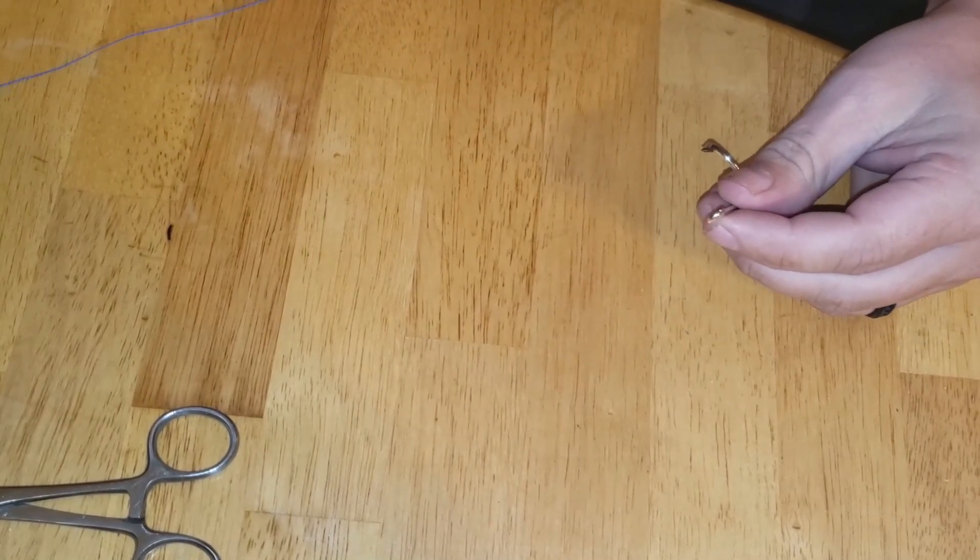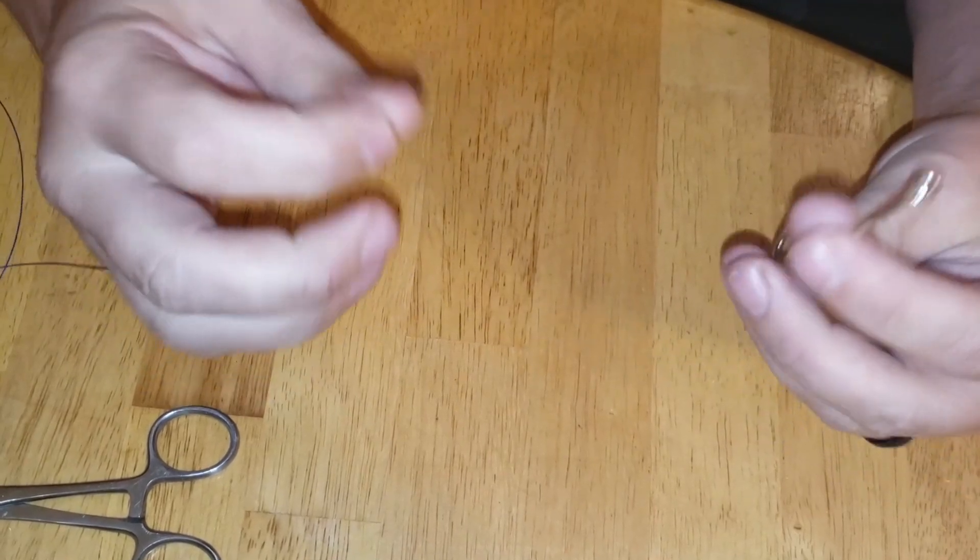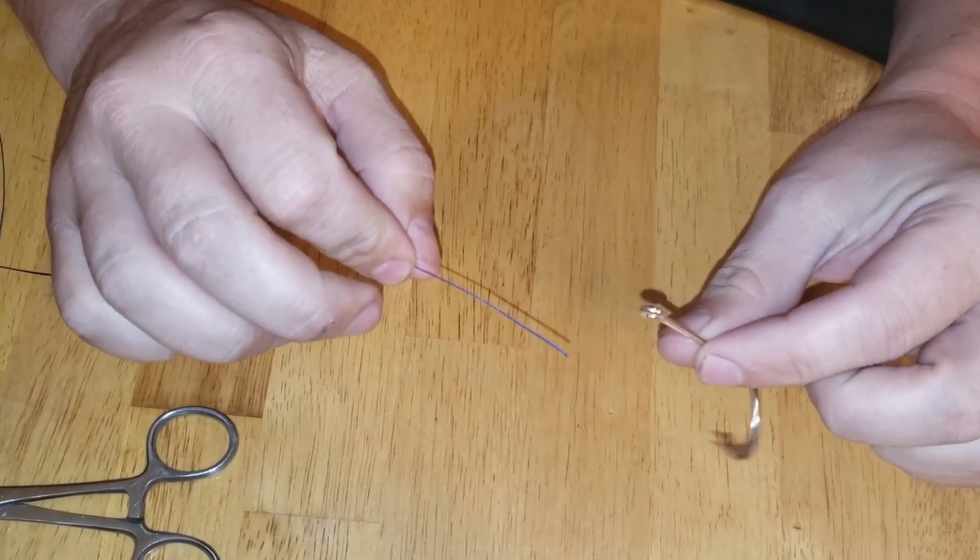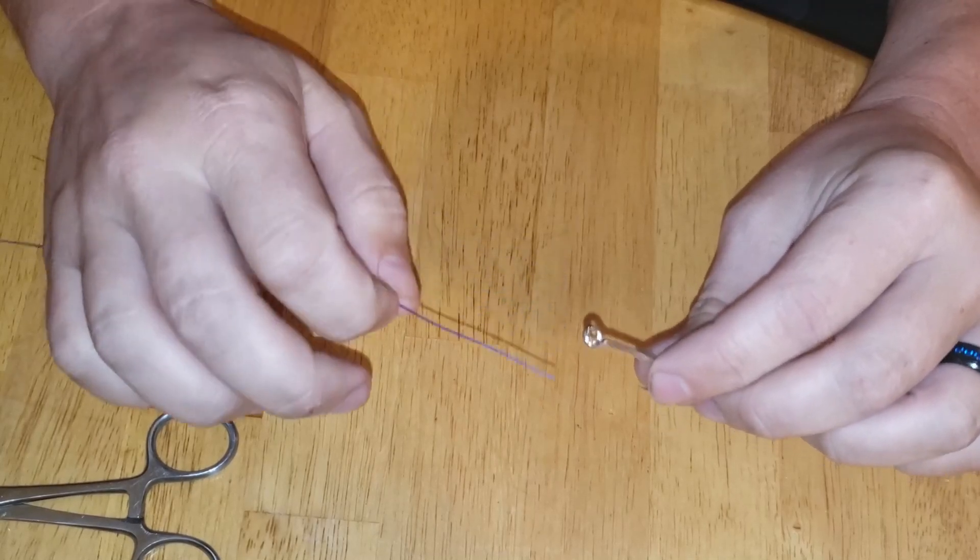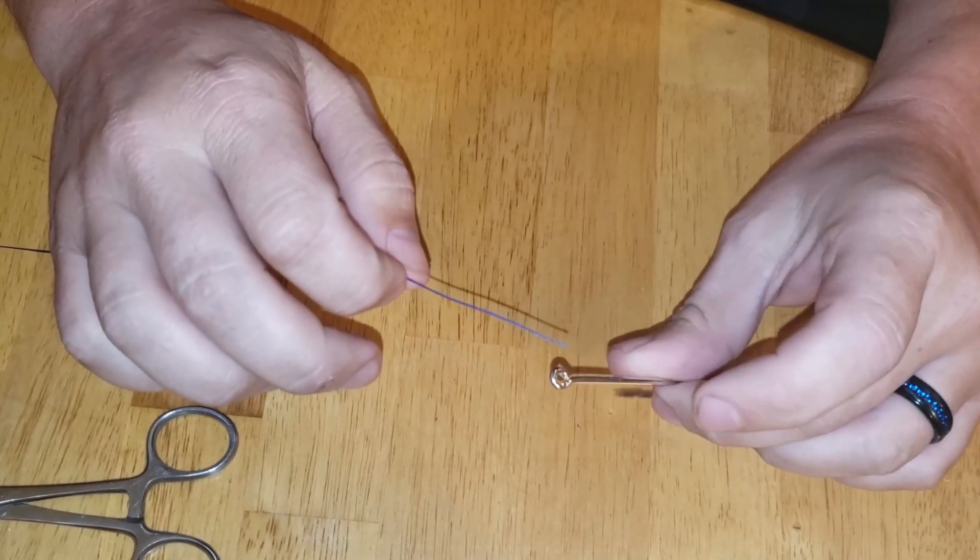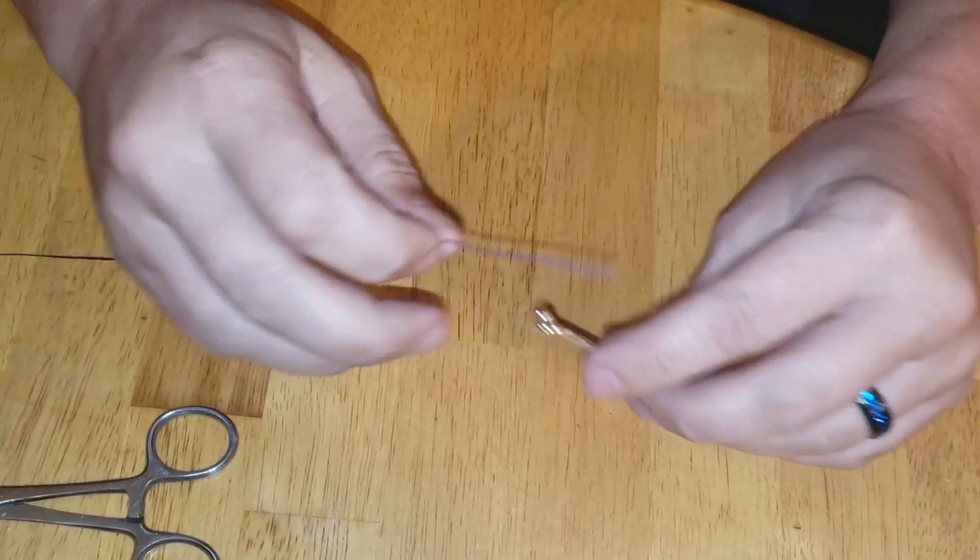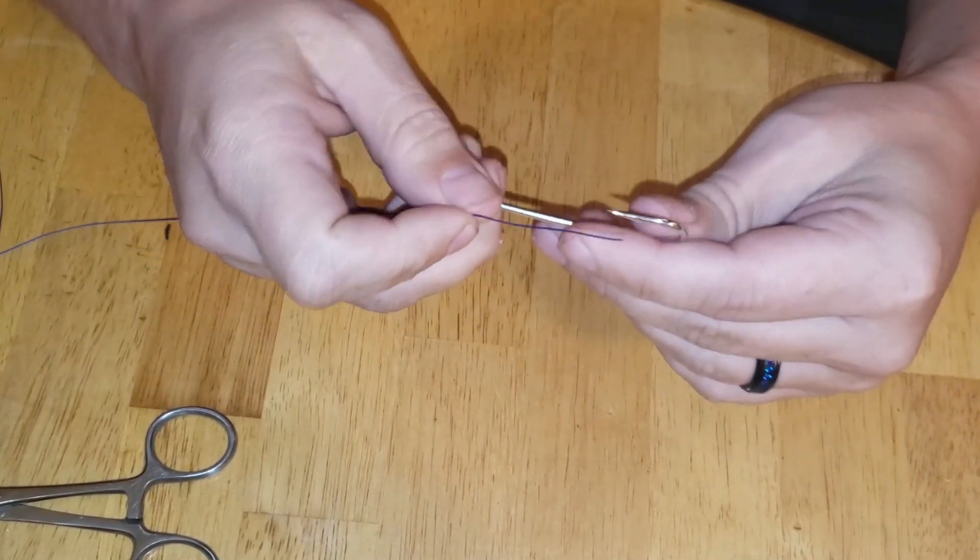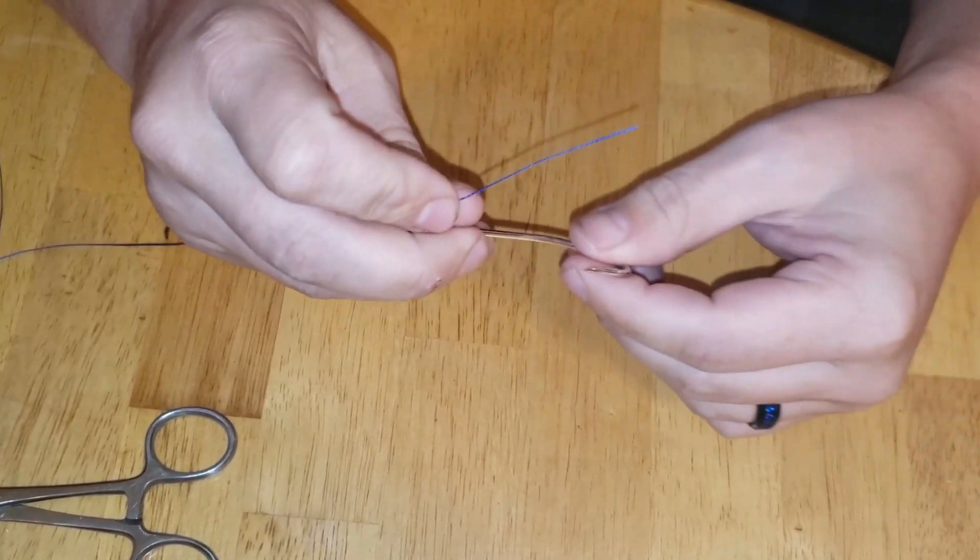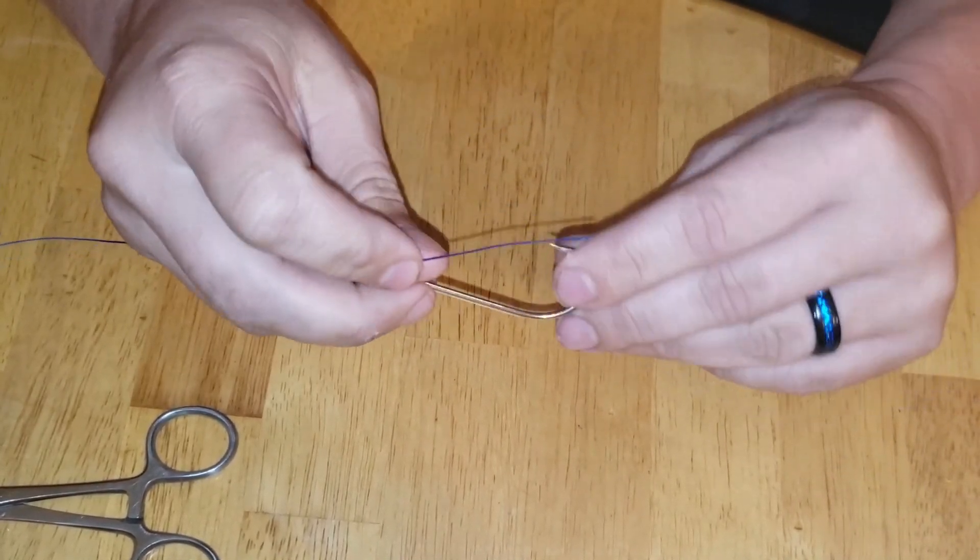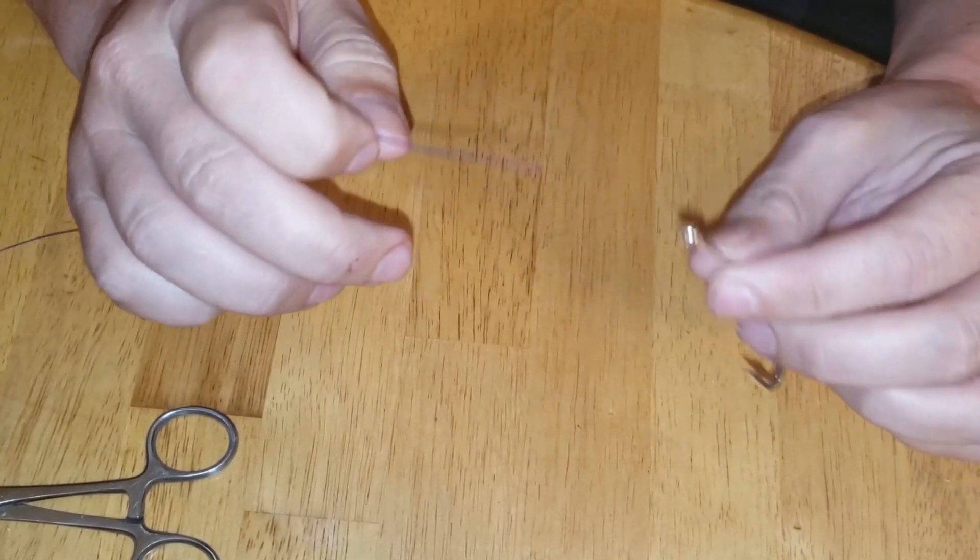All right, today I wanted to show you the double Davey knot and why I think it's probably the best knot out there. It's not the strongest knot out there, but let's say you're fishing at night and your hook gets broken off or bent, the fish are biting, and you need to get right back out there and start catching fish again.